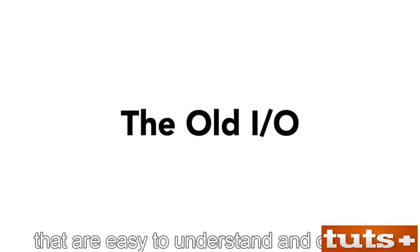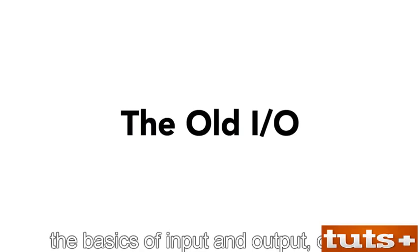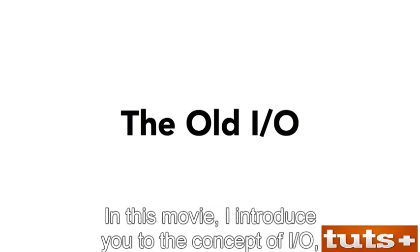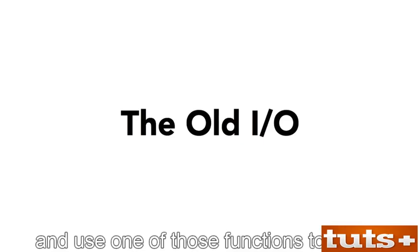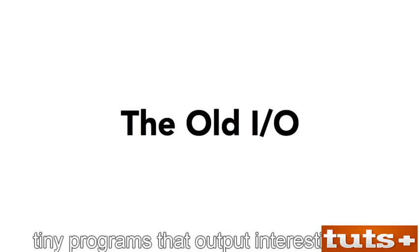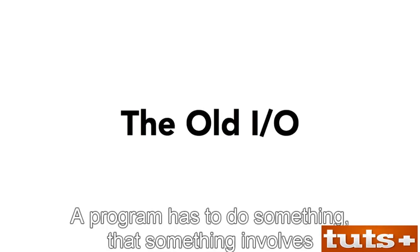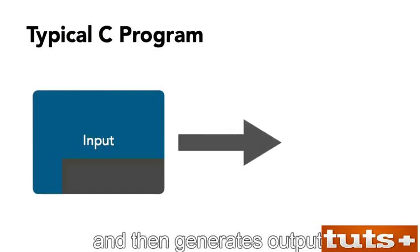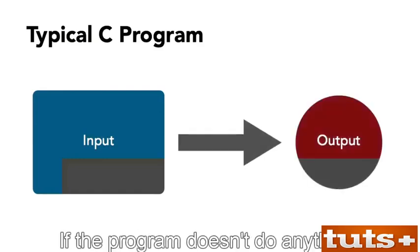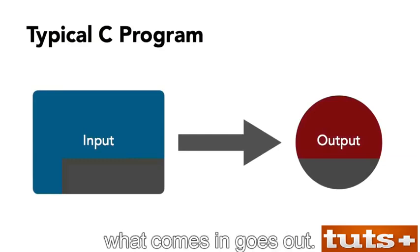The best way to get started on your programming journey is to write simple programs that are easy to understand and change. To handle that task, it helps to know the basics of input and output, or I/O. In this movie, I introduce you to the concept of I/O and how that plays into programming. A program has to do something — that something involves taking input and generating output. This is how a typical C program works: it's a machine that does something to input and then generates output.